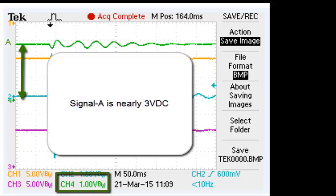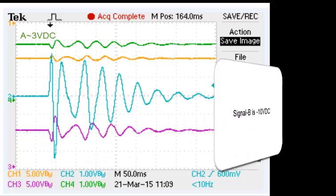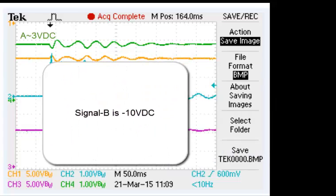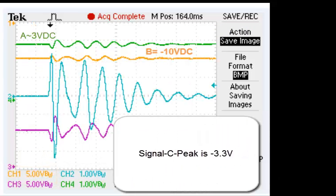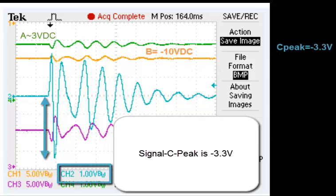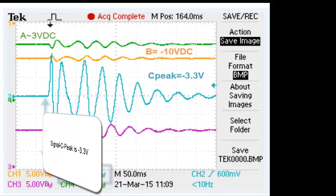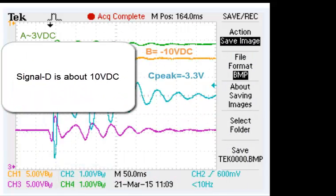Signal A is nearly 3 volts. Signal B is negative 10 volts. Signal C peak is negative 3.3 volts. Signal D is about 10 volts.